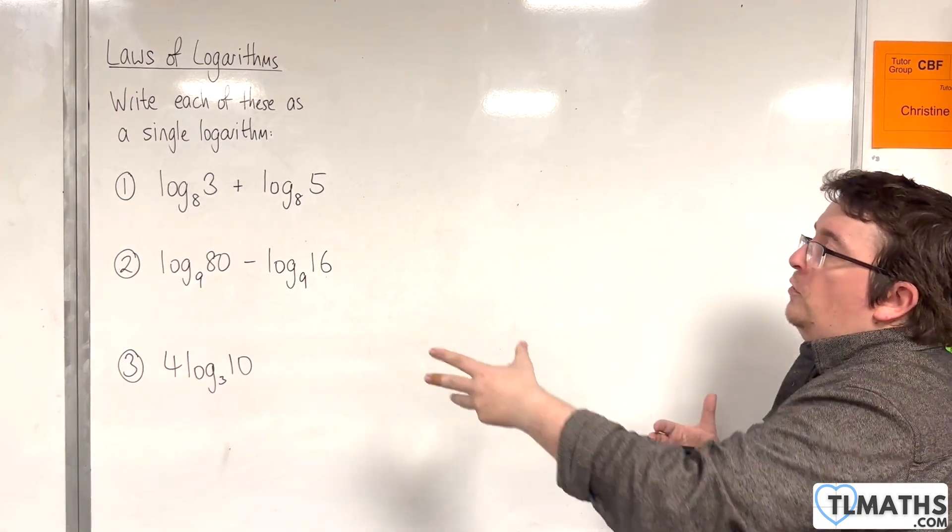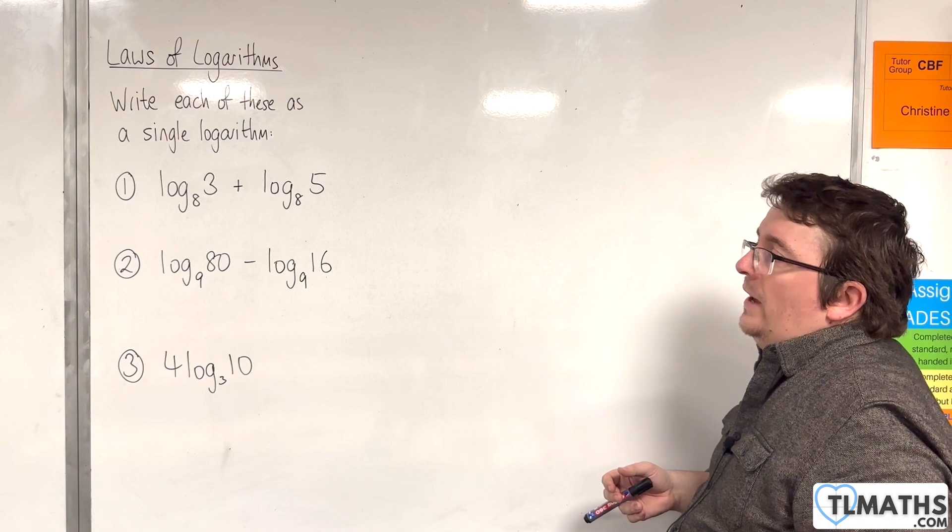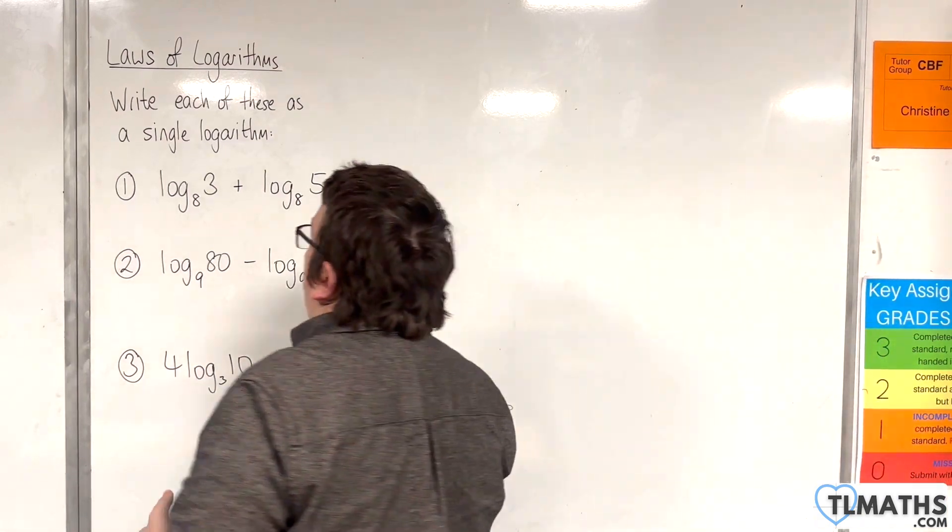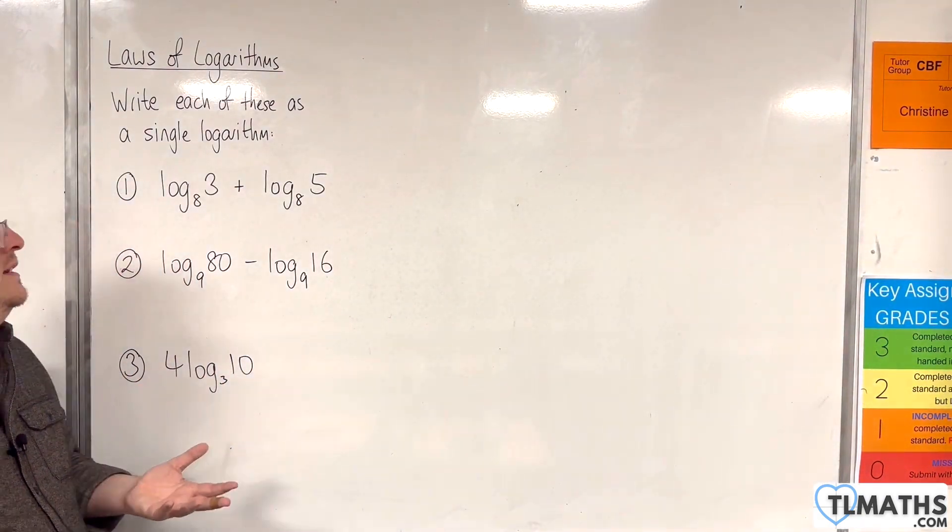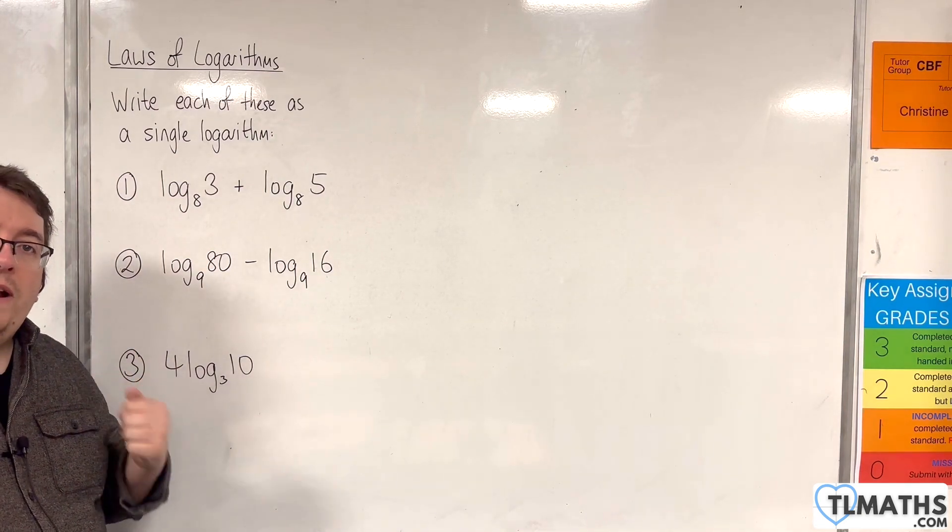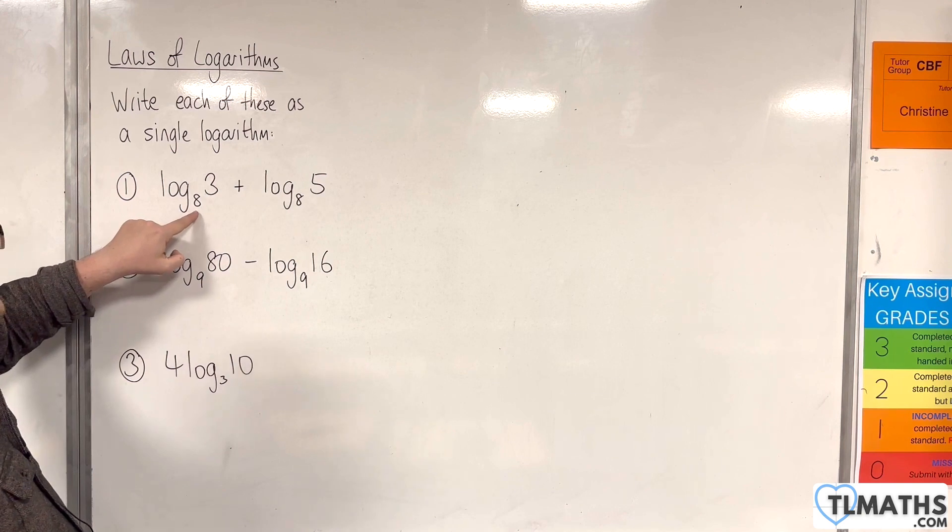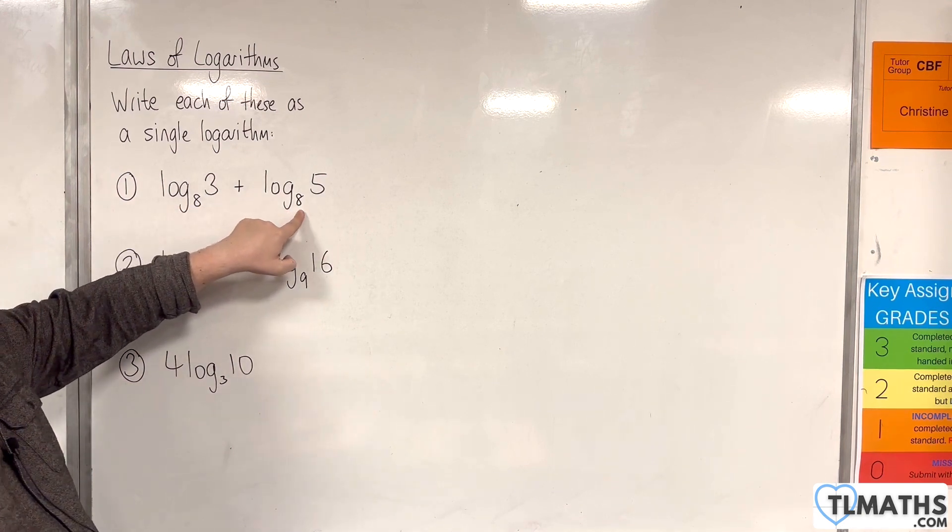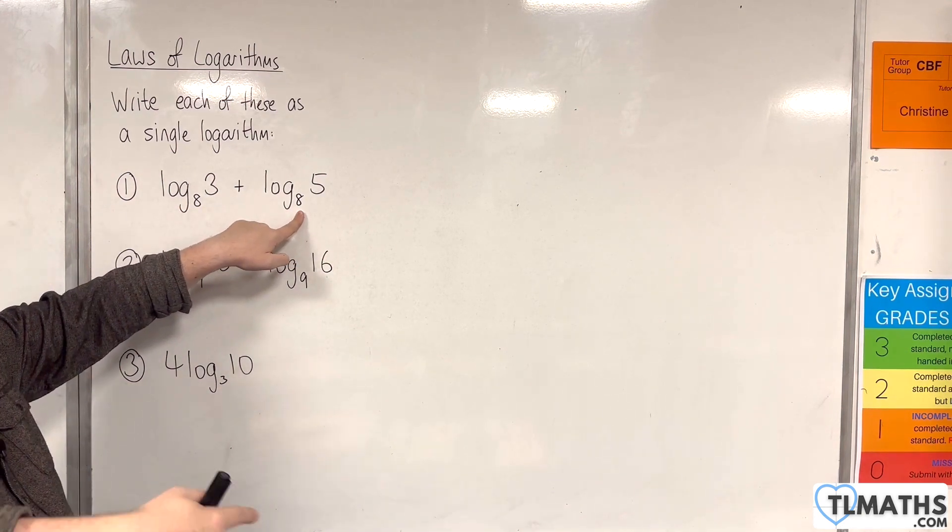Question number one, log base 8 of 3 plus log base 8 of 5. Now, in order to use the product and quotient rules that we looked at in the previous video, you have to have the base values the same. So here we have 8 and 8, and that's telling me that I'm allowed to use a log law.